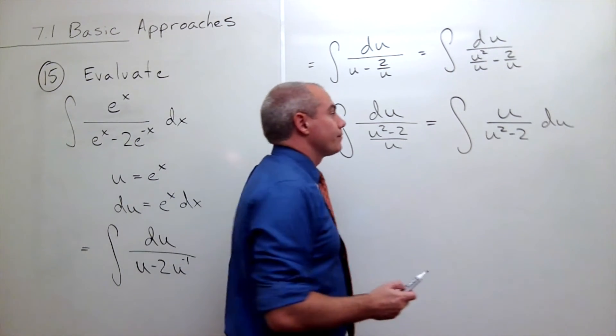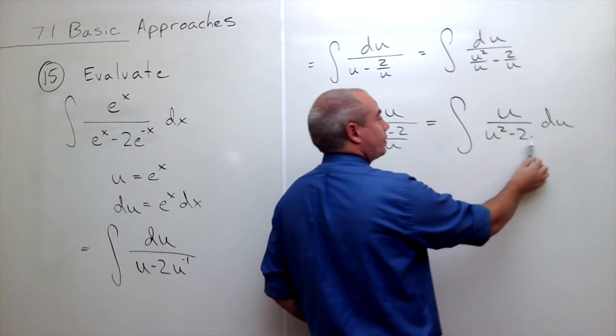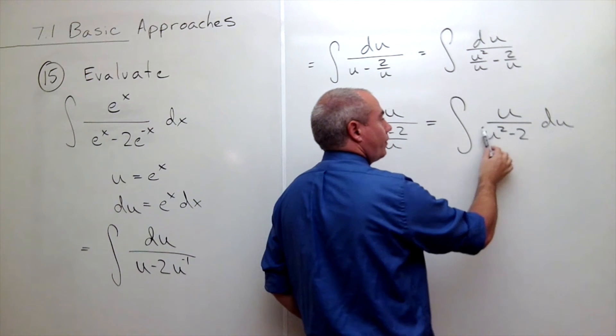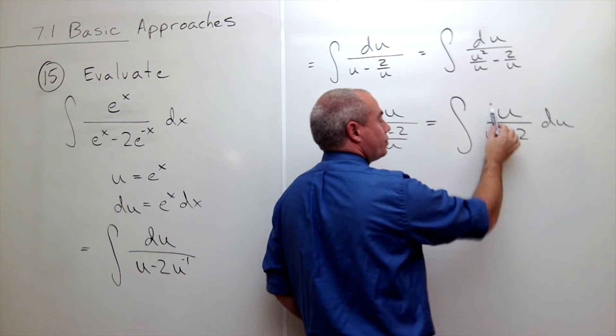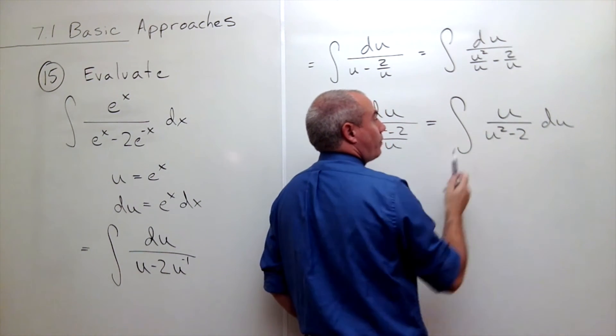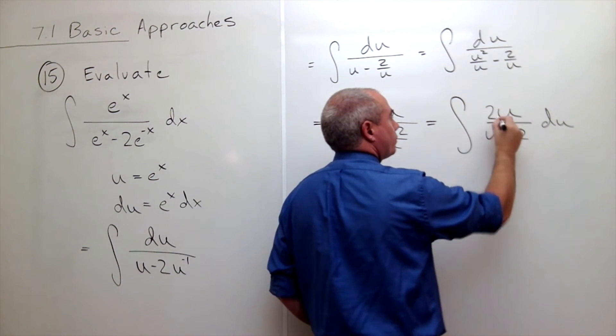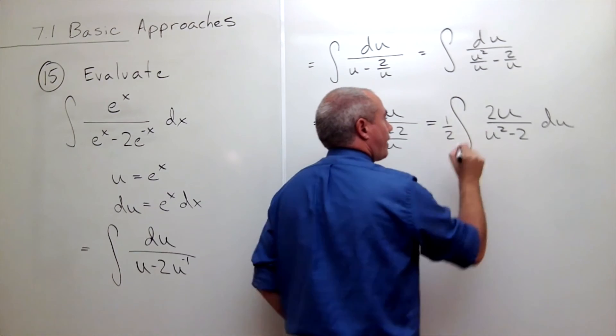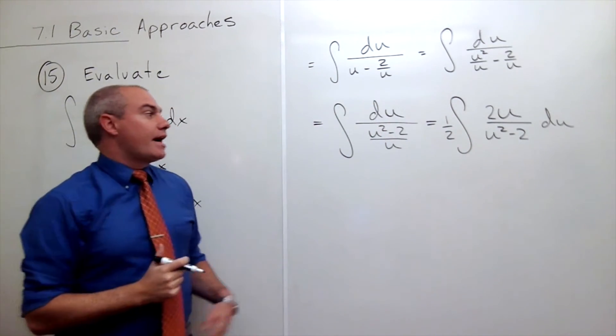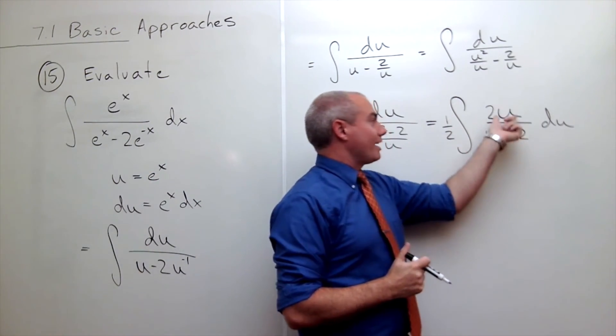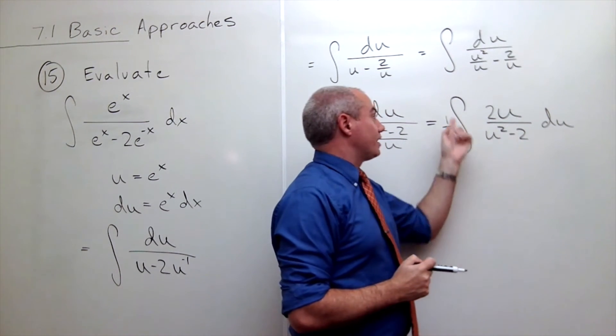So right now if I take the derivative of the bottom I get 2u. That's not what I have on top, but I could make it that way by putting in a 2 on top and putting a one half outside. Now if I take the derivative of the bottom I get the top, which means that the anti-derivative is the natural log of the bottom.